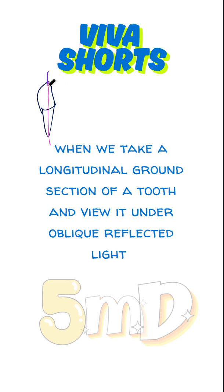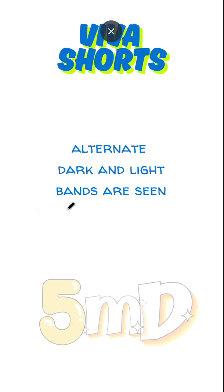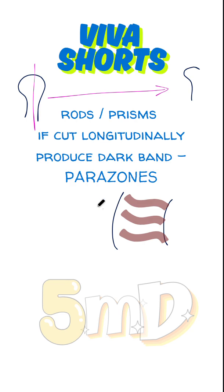When we take a longitudinal ground section of a tooth — grinding the tooth in the longitudinal direction — and view it under oblique reflected light, an optical phenomenon is observed. Alternate dark and light bands are seen. Hunter-Schreger Bands is the name given to this optical phenomenon.